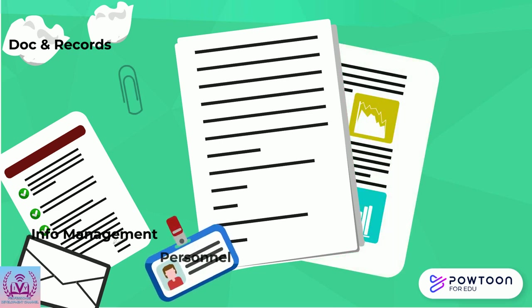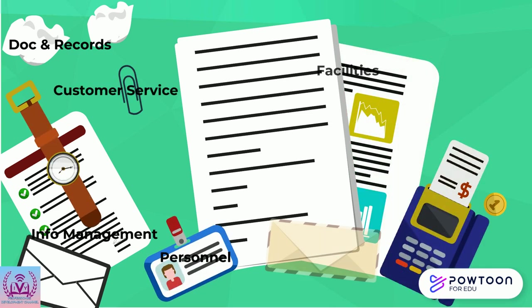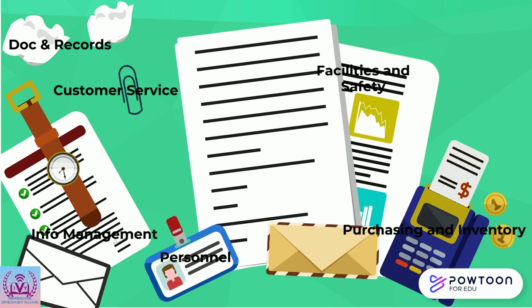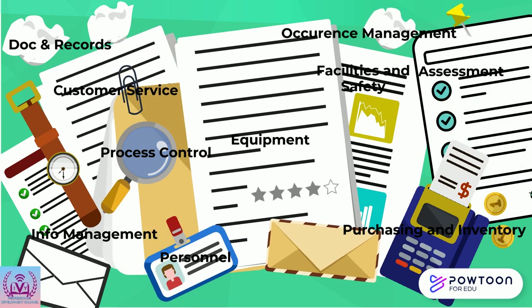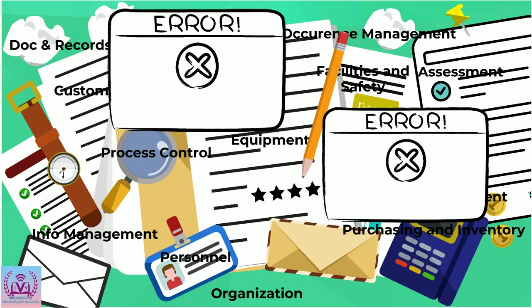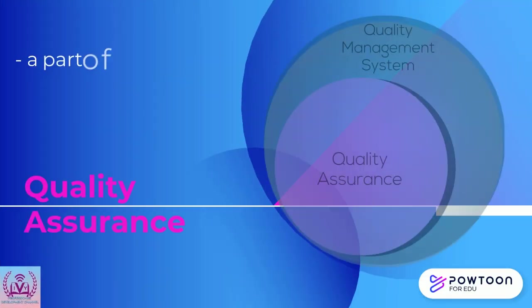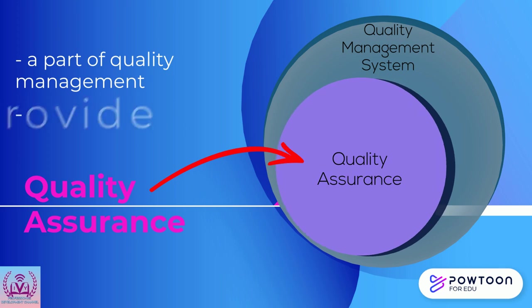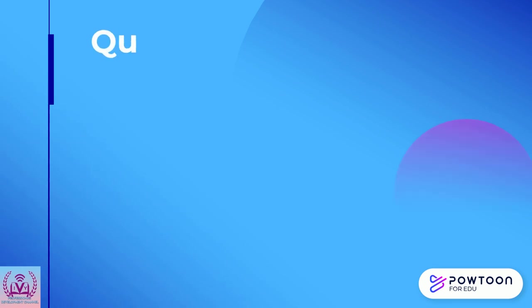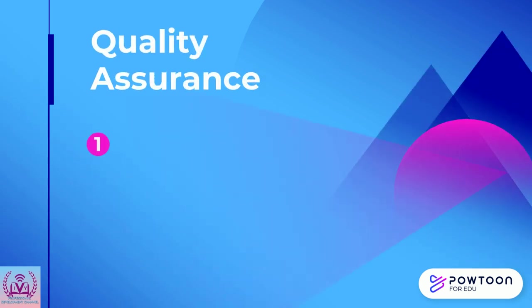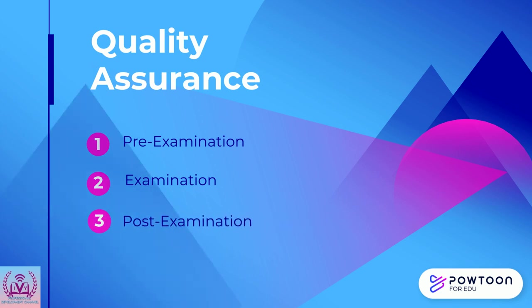In the quality management system model, many of the 12 quality system essentials overlap, and all 12 must be addressed to ensure accurate, reliable, and timely laboratory results and to have quality throughout the laboratory operations. Quality assurance is a part of quality management focused on providing confidence that quality requirements will be fulfilled.